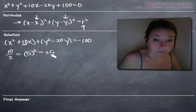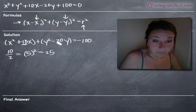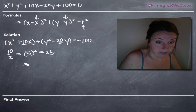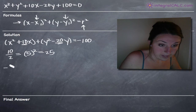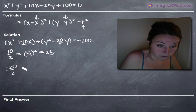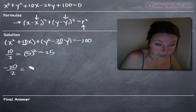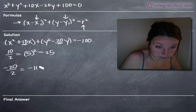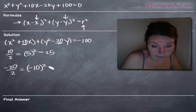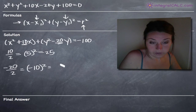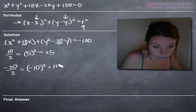We'll do the same thing with y. We take the coefficient on the y term, which is negative 20, and divide that by 2 to get negative 10. Then we square it — negative 10 squared is 100.